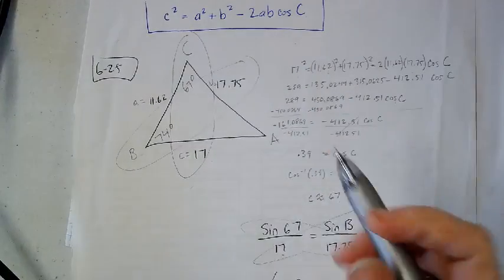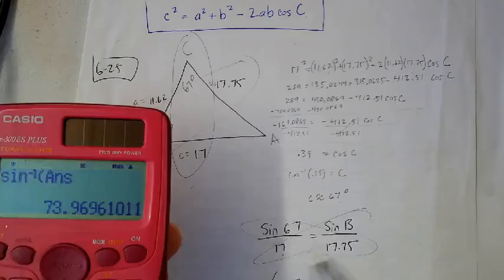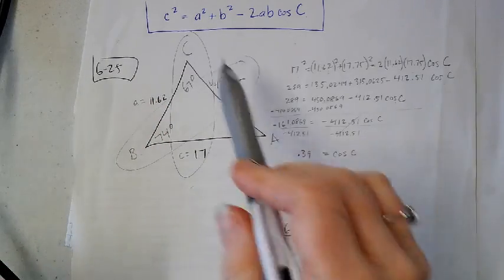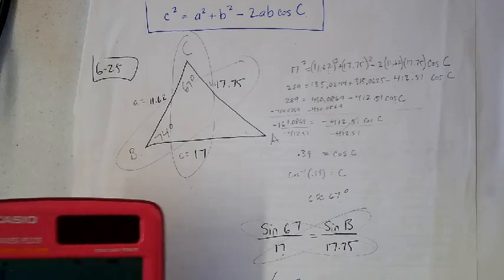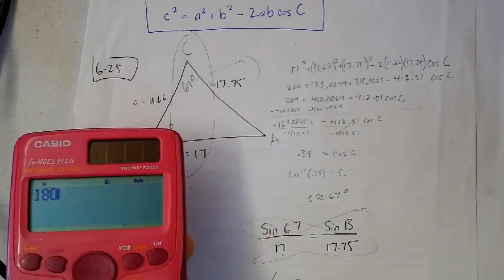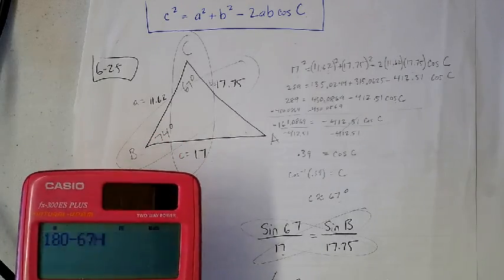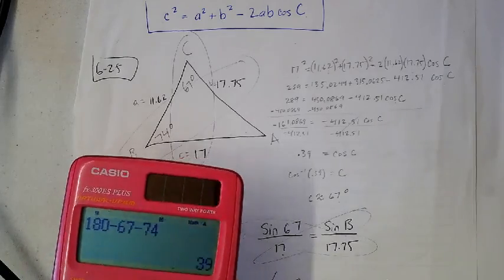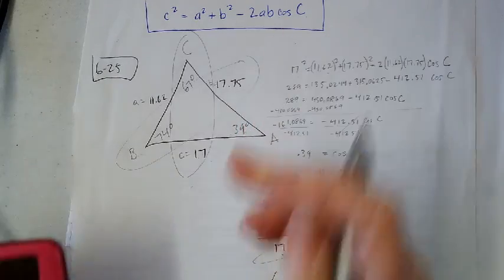All I have to do to find this—so I took my 74 degrees that I just got, and now all I have to do to solve this triangle is get A. So I'll just go 180 minus 67 minus 74, and that leaves me with 39.